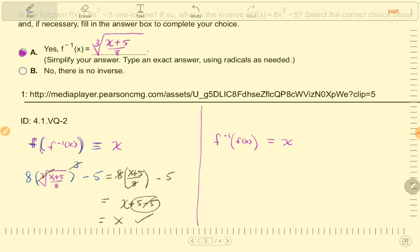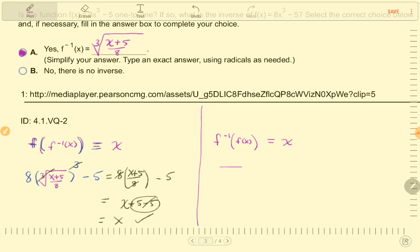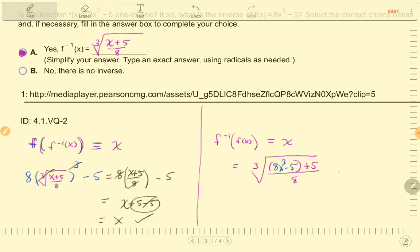And, for this one, we're going to be doing the outer function is the inverse, so that'll be the cube root of x plus 5 over 8, plugging in the original function, 8x cubed minus 5, and then simplify. So, inside...